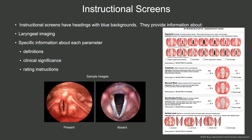The information in this tutorial is organized into two main types of screens. Instructional screens have headings with blue backgrounds. They provide information about laryngeal imaging, specific information about each parameter, including definitions, clinical significance, and rating instructions.